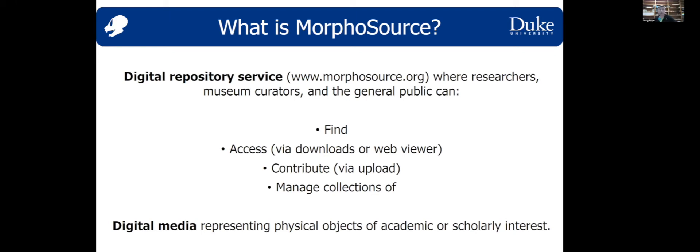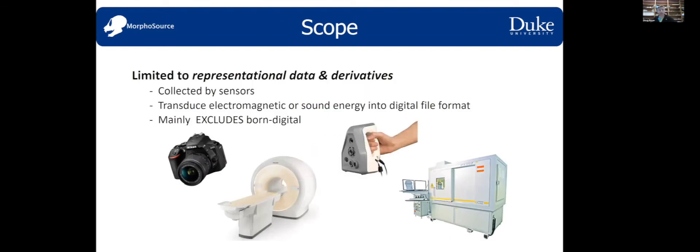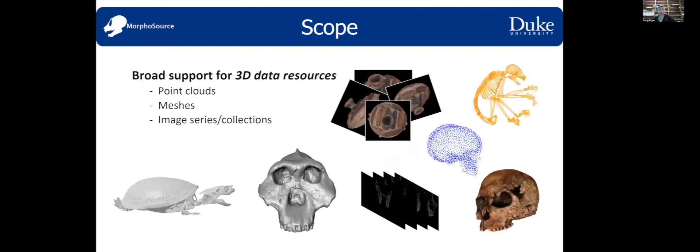There is an emphasis on 3D, three-dimensional representation. The scope is limited to representational data and its derivatives — data collected by sensors — which mainly excludes document types of data or born-digital data. We have broad support for 3D data resources, including data formats for CT scans, structured light scanners, and photogrammetry models.